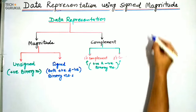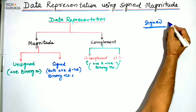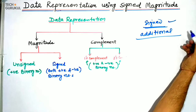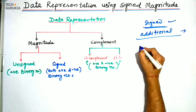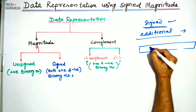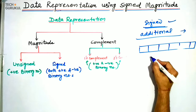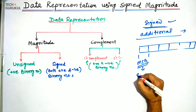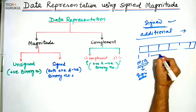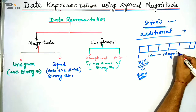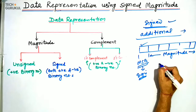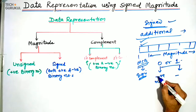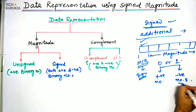If we want to represent signed numbers, an additional bit is used as a sign bit and placed as the MSB. This MSB bit will represent the sign of the number and the remaining bits will represent its magnitude. We place 0 or 1 at the MSB position: 0 is used for positive numbers and 1 is used for negative numbers.